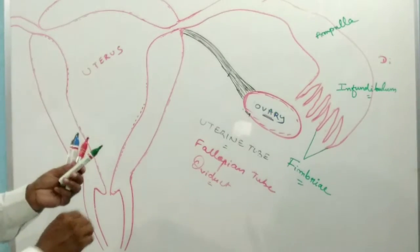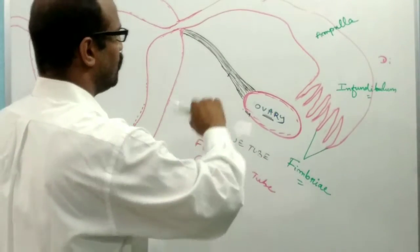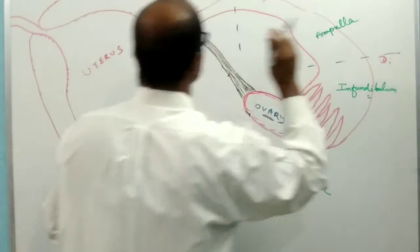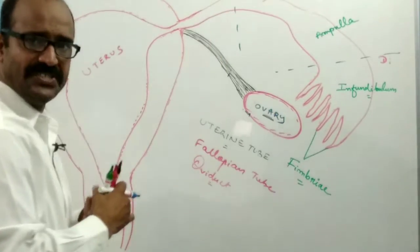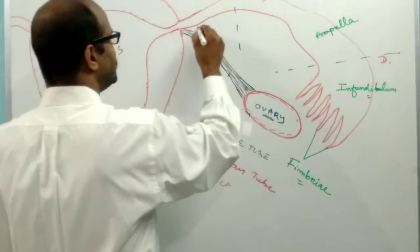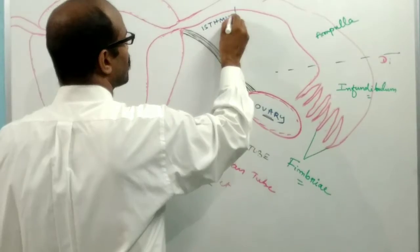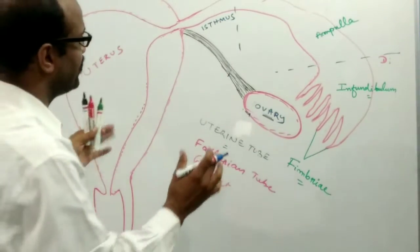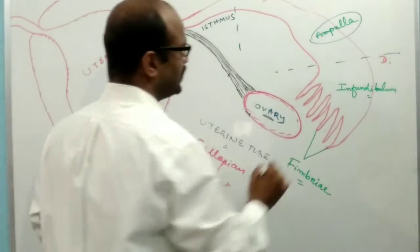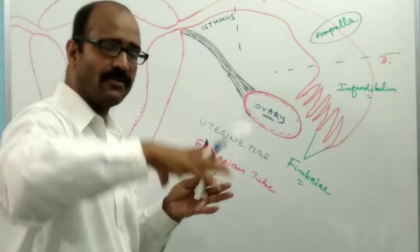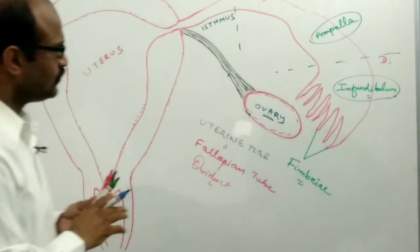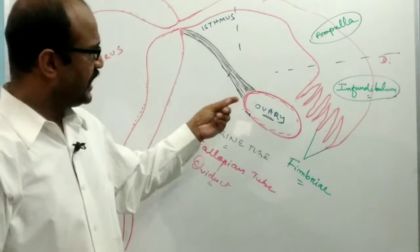You can divide the whole fallopian tube into three parts. The proximal region, which is narrow and constricted and opens into the uterus, is known as the isthmus. The middle portion, which is somewhat expanded, is known as the ampulla. The distal portion, which has the funnel-shaped structure, is known as the infundibulum.